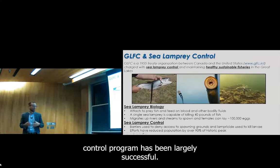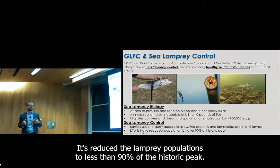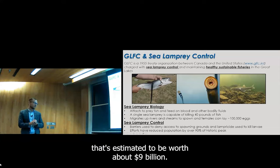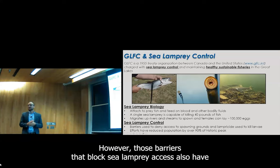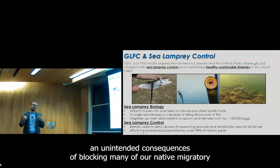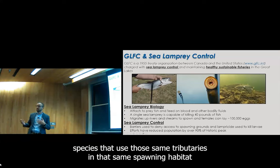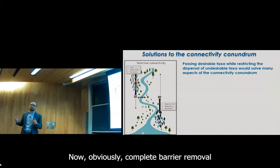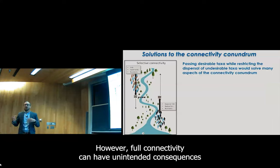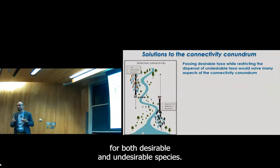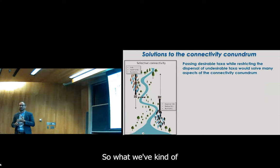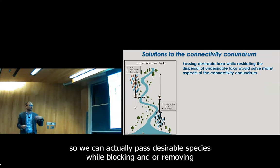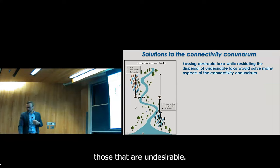This control program has been largely successful — it's reduced sea lamprey populations to less than 10% of the historic peak, protecting a fishing industry estimated at worth about $9 billion. However, those barriers that block sea lamprey access also have the unintended consequence of blocking many native migratory species that use those same tributaries and spawning habitat to complete their life history. Complete barrier removal is a recognizable solution to this connectivity problem, but full connectivity can have unintended consequences for both desirable and undesirable species.